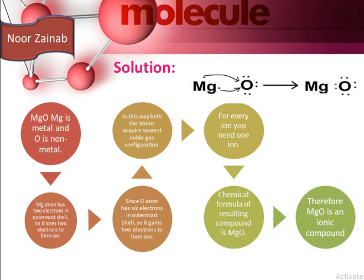In the electron dot structure of magnesium oxide, magnesium has two valence electrons and oxygen has six. Magnesium donates two electrons to oxygen to form ions. These opposite ions then attract each other, and due to this electrostatic attraction an ionic bond is formed between magnesium and oxygen — where magnesium is a metal and oxygen is a non-metal.